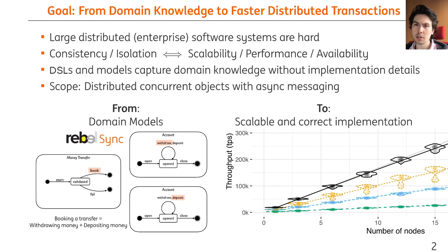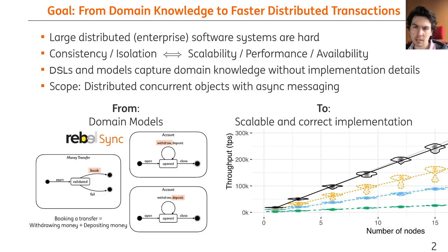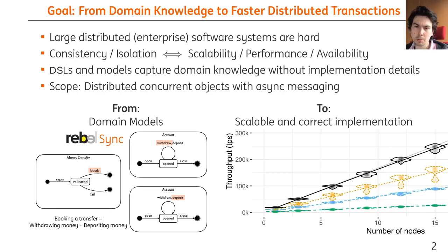We all know that large software landscapes with multiple distributed applications become complicated and hard to maintain over time. In order to manage this complexity, one approach is to use high-level models using domain-specific languages to capture domain knowledge without implementation details. However, efficiently implementing these models for all possible use cases is non-trivial, since different use cases have to pick different inherent trade-offs in distributed systems between consistency and performance. But since we have these domain models, maybe we can use these to be more efficient than general-purpose implementations can be.